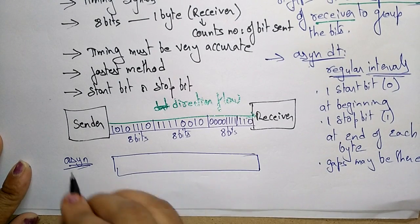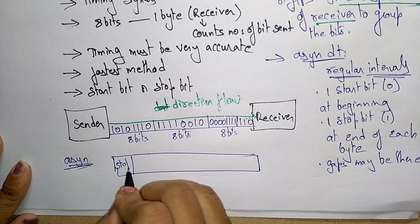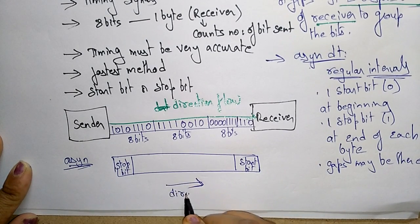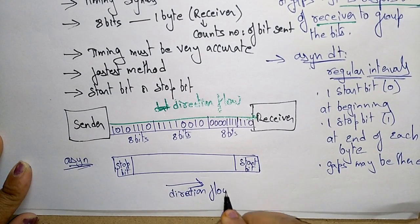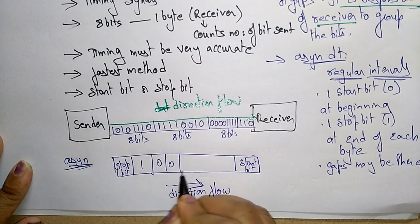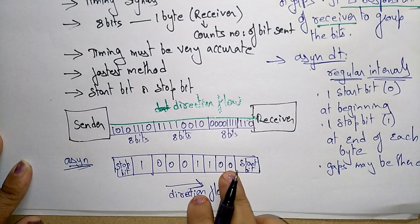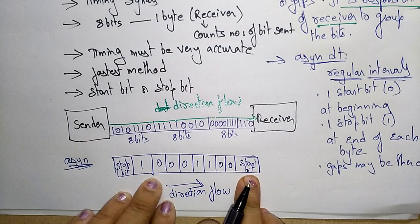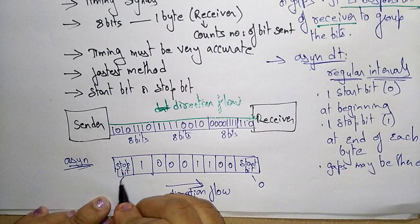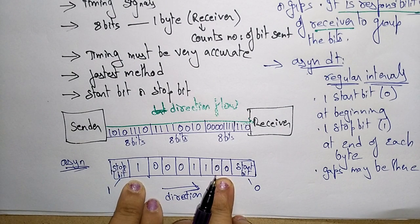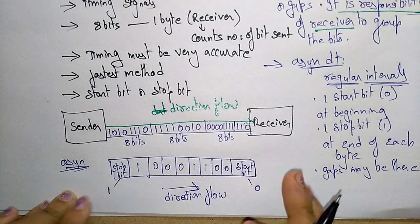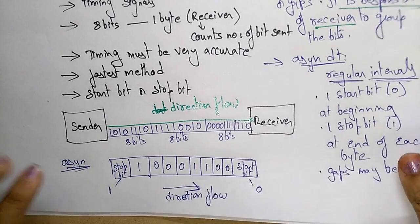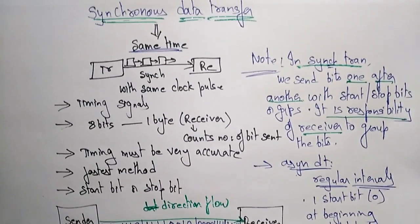In asynchronous transmission, looking at the diagram: the bits flow from sender to receiver, with a stop bit at one end and a start bit at the other. The data is, for example, 1, 0, 0, 0, 1, 1, 0, 0 — eight bits. After the completion of one byte, it is framed between the start bit (zero) and the stop bit (one). After receiving all ten bits including start and stop, the receiver understands that one byte of data is complete, then takes the next byte. In asynchronous format, data is not transferred at the same time — it may occur at regular intervals.